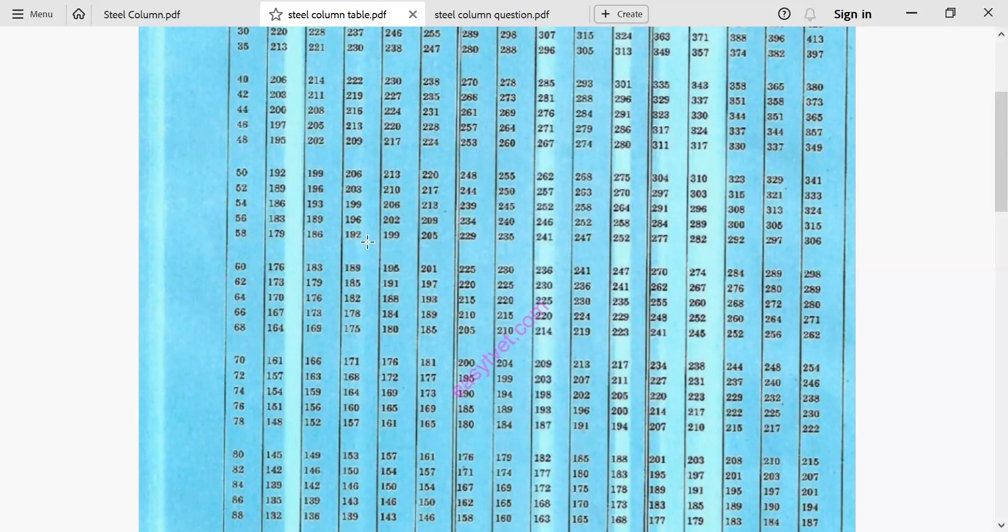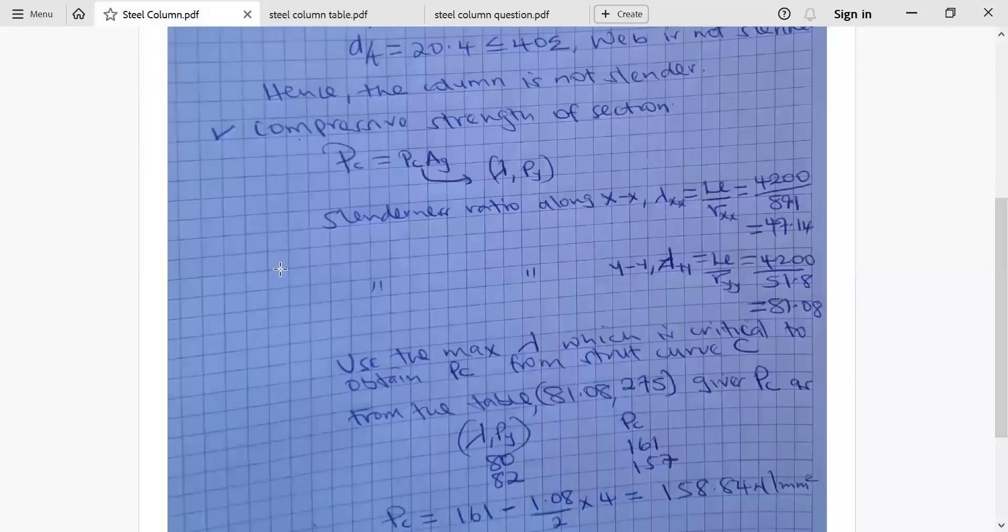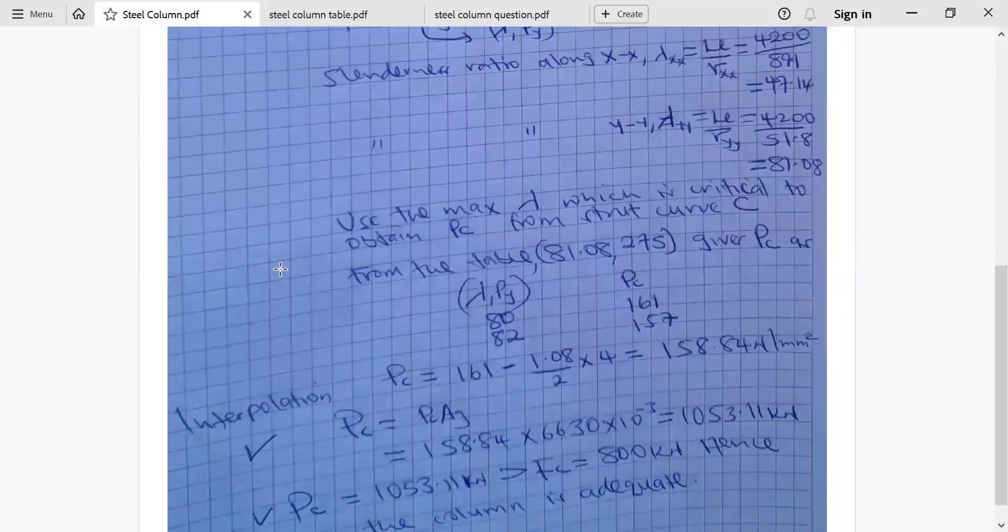From there, by interpolation, we'll be able to obtain the value of PC at 81.08. This is how we proceed. We come here and say this intersection at 80 is 161, and 82 is 157. So, you look at the higher the slenderness ratio, the lower the strength, the PC.